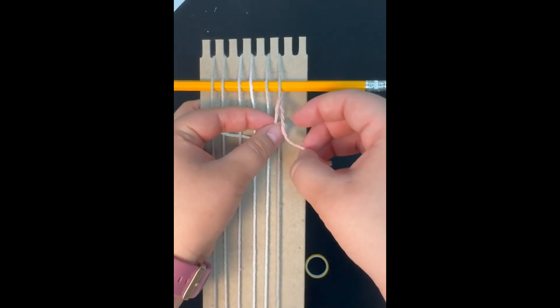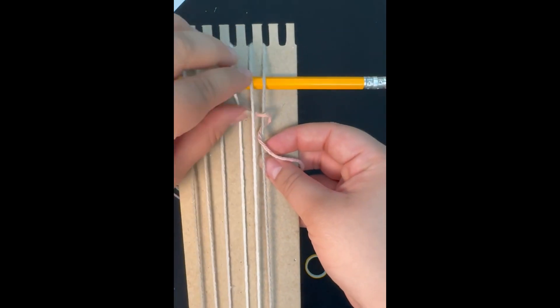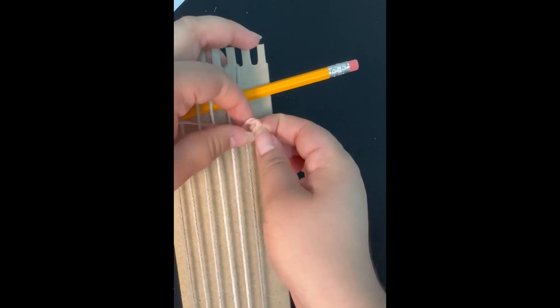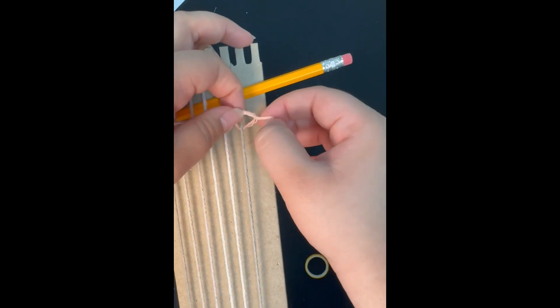With the excess yarn, you'll tie a knot on the first string. This knot is going to secure your bookmark so that it doesn't unravel while you're weaving.